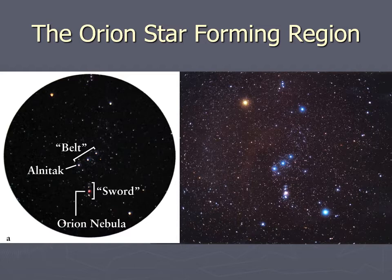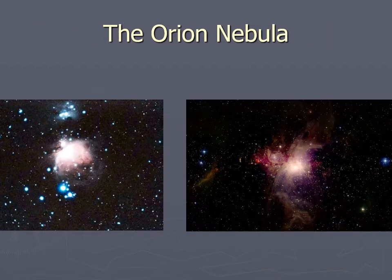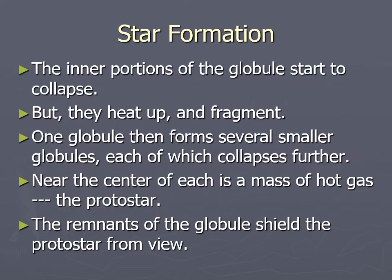The Orion area is actually a region where lots of stars are forming, and the Orion Nebula is a region where stars are in the process of forming right now — glowing because some recently formed stars are causing the gas to glow. The inner parts of the globules start collapsing, heat up, and then start to fragment, so your globule clumps up into several smaller globules. This means typically you don't get just one star — you get a little clump of stars. Not all the gas gets into those smaller globules; some dissipates back into the interstellar medium.